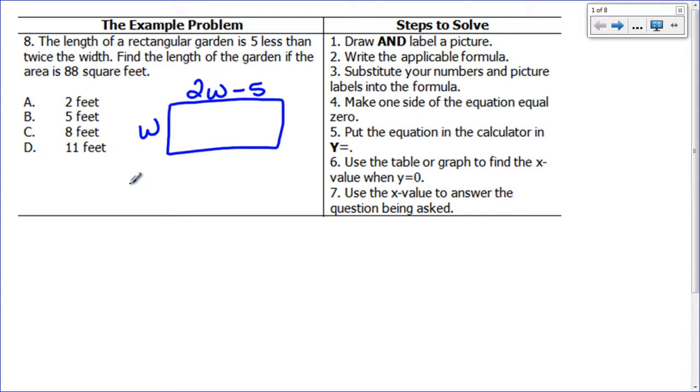Then we have to write the applicable formula. The formula for this is going to be an area formula because that's what they tell us, and I know the area is equal to length times width. So we're going to plug in our numbers, step three, substitute our numbers and our labels. So the area is 88, that's what it said in the problem. The length is 2W minus 5, and the width is W.